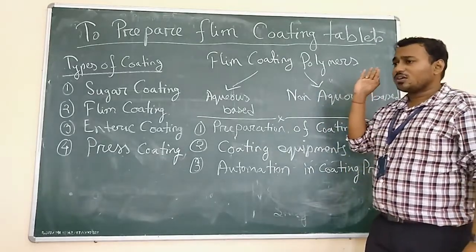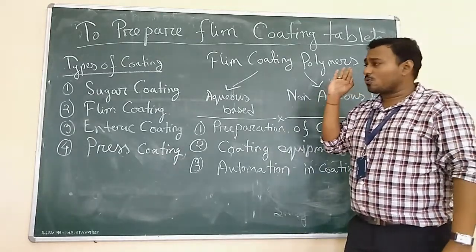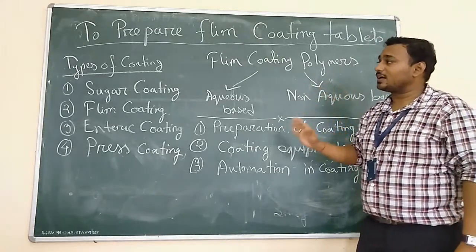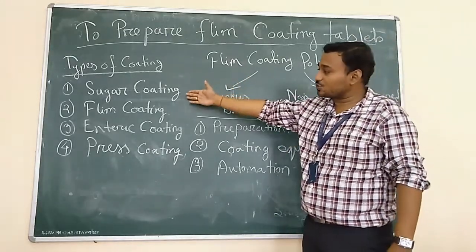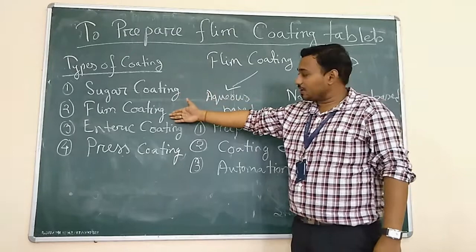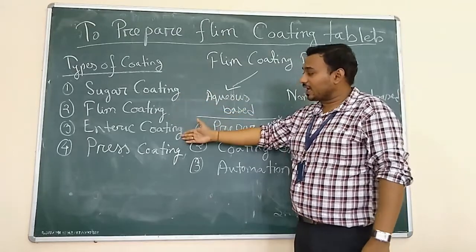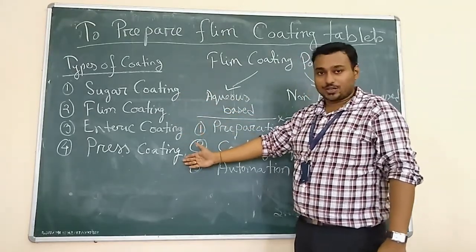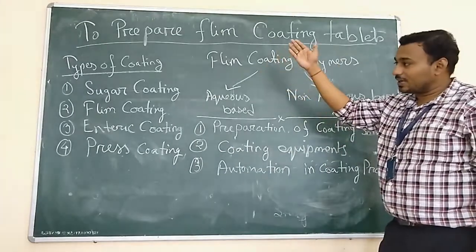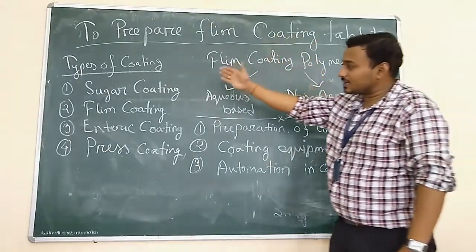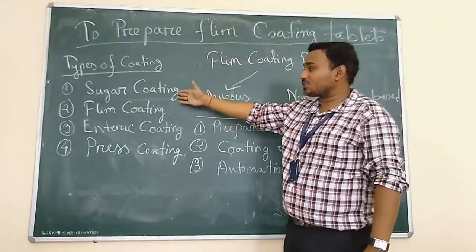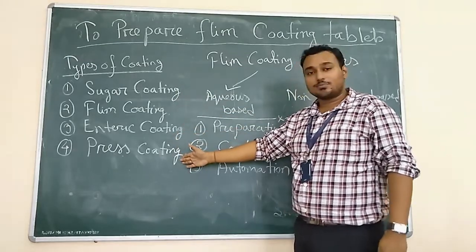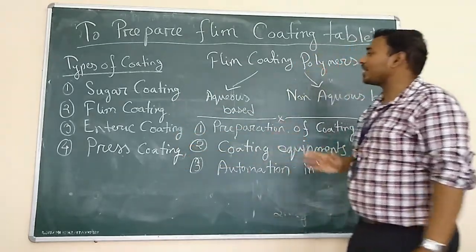How many types of coatings are there? The types of coating are: first one is sugar coating, then film coating, then enteric coating, then press coating. These are the mainly basic types of coatings: sugar coating, film coating, enteric coating, and press coating.